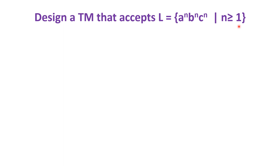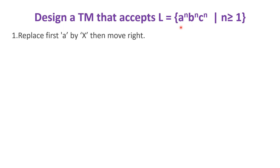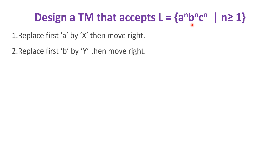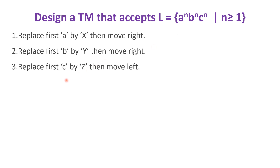The logic is the same as designing a Turing machine for A raised to N, B raised to N, where first we find the first A. On finding the first A, replace it by X and move towards the right to find the next B. Once we get the first B, replace it by Y and move towards the right to get the first C. On getting the first C, replace it by Z. This completes one set of ABC replacing as XYZ.